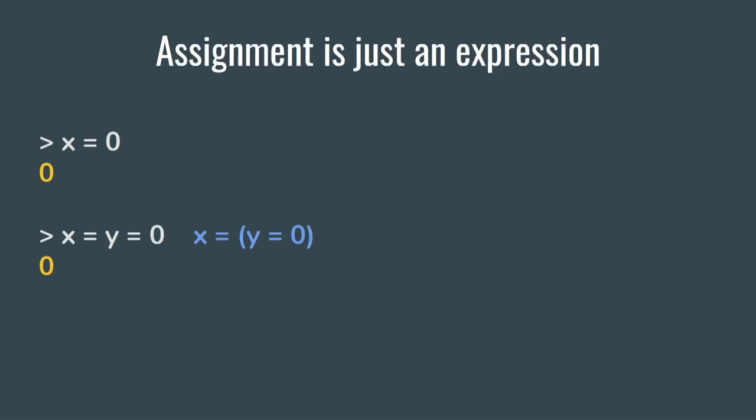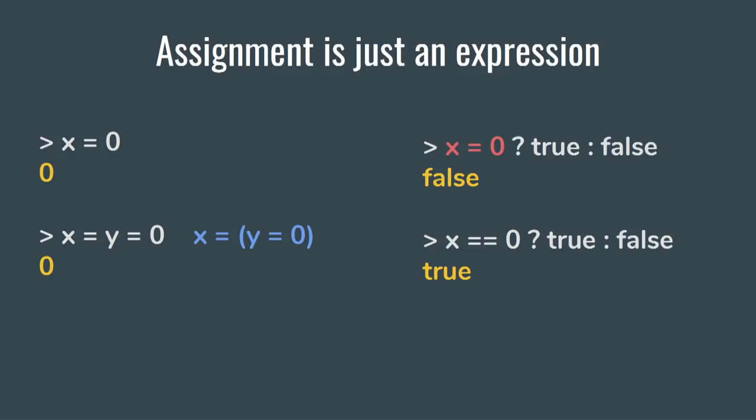In JavaScript, assignment is just an expression. That means that anywhere you can put an expression, you can put an assignment, and that might lead to some traps. There will be no syntax error if you mistype your equality operator and put assignment instead. So to avoid that, just enable a rule from your favorite linter which will ban all suspicious usages of the assignment operator.